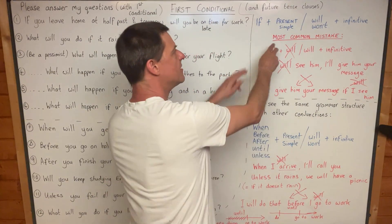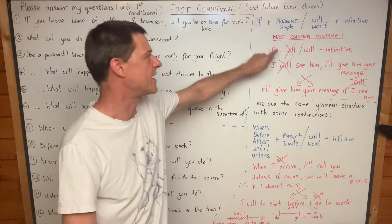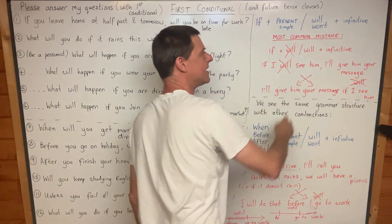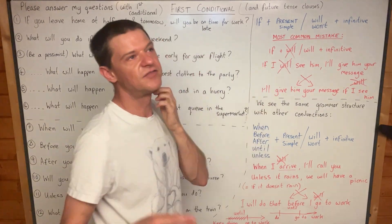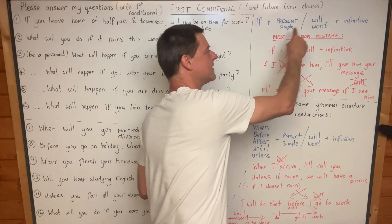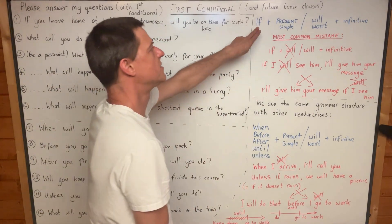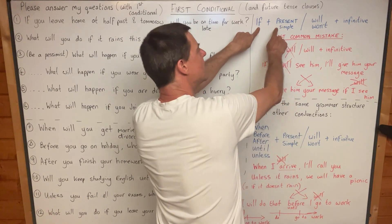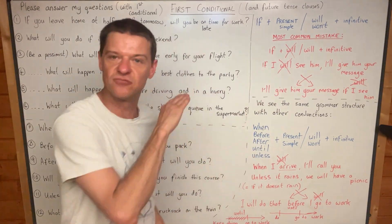First conditional is if and will and won't, but it's not will or won't here, and that is very, very important. Because this is the most common mistake. In many languages, you use first conditional with a will here and a will here. Many students from many different countries make this mistake, and I assume they are translating from their own language — thinking in my language I use if and will and then will again, so I'm going to do that in English. But it's not correct. Don't say it, please.